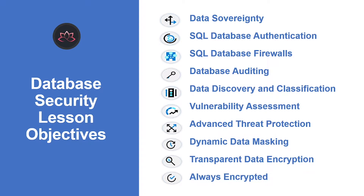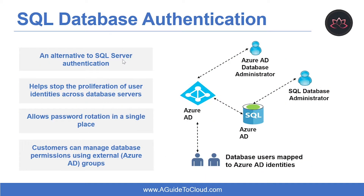So without wasting any more time, let's get into it. What is SQL Database Authentication? Let's discuss about authentication and authorization. Authentication is the process of proving the user is who they claim to be. A user connects to a database using a user account. When a user attempts to connect to a database, they provide a user account and authentication information. The user is authenticated using one of the following two authentication methods: either SQL Server Authentication or Azure Active Directory Authentication.